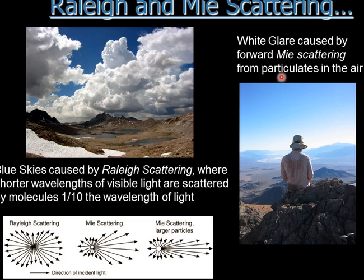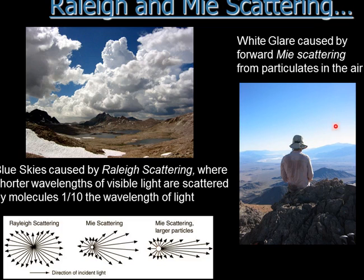Another type of scattering is Mie scattering, which we tend to get a lot in the wintertime. If you ever drive to Tucson and you're looking towards the sun, you'll tend to see a white glare in the sky instead of blue. In Mie scattering, light comes in and impacts sand particles and pollen particles in the atmosphere, and the light gets concentrated towards you — in a forward direction — so it gets really bright. If you look away from the sun, the sky is blue and normal.